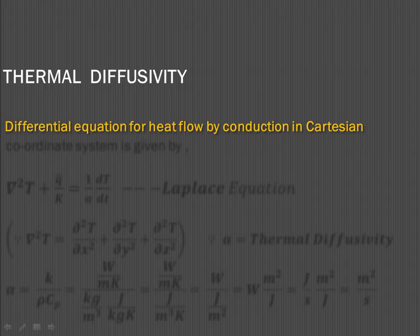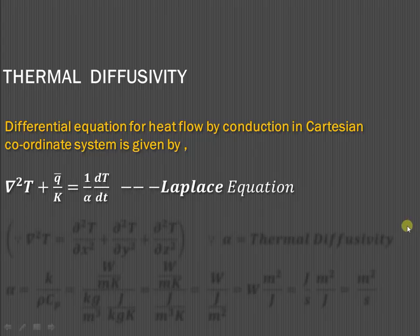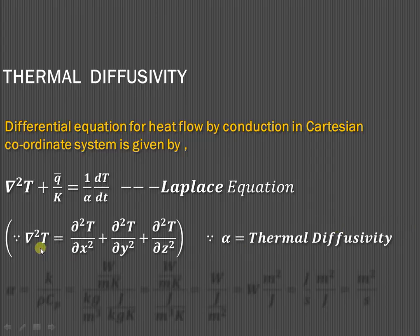Today we will try to understand what is the meaning of thermal diffusivity. The differential equation of heat flow by conduction in the Cartesian coordinate system is given by the Laplace equation: del squared T plus Q-bar upon k is equal to 1 upon alpha dT by dt. Here, del squared T is the Laplace operator: it is d²T/dx² plus d²T/dy² plus d²T/dz². The alpha term is known as the thermal diffusivity.